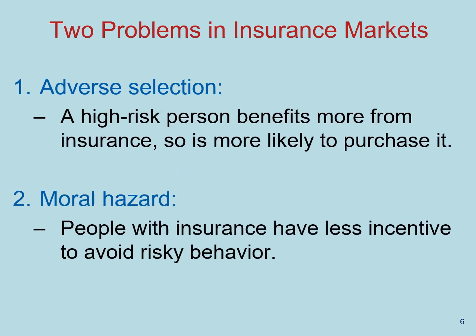Now let's think about two important problems in insurance markets: one, adverse selection, and two, moral hazard. Adverse selection simply says that a high-risk person benefits more from insurance, so they are more likely to purchase it. Moral hazard, on the other hand, says that people with insurance have less incentive to avoid risky behavior. These two problems are rooted in asymmetric information, which happens when parties about to engage in a contract know very different levels of information about the underlying risk.